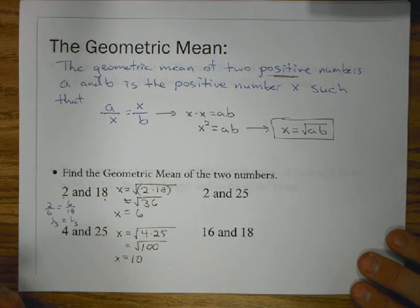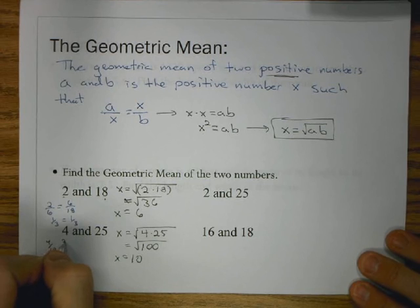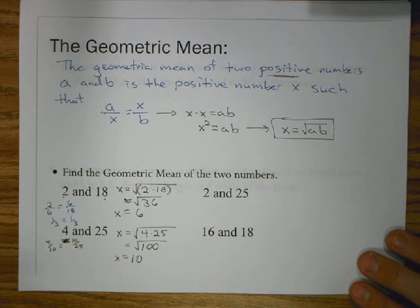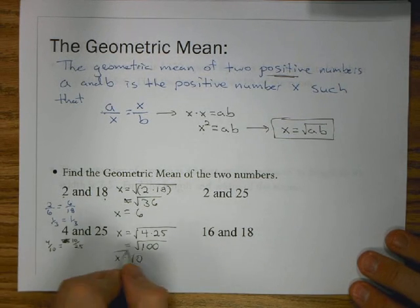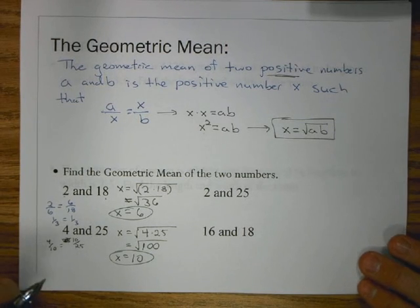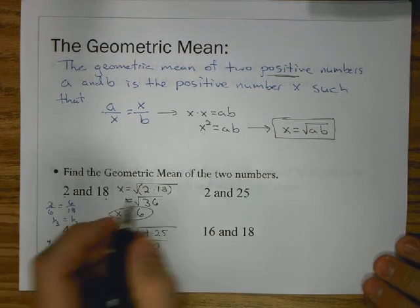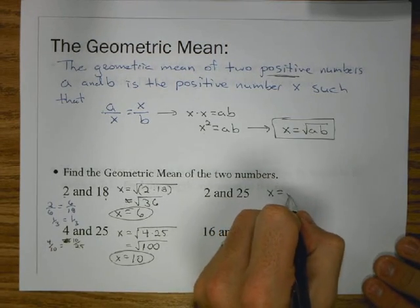So, my geometric mean is the square root of 2 times 18. If we do that, we get the square root of 36, which is just 6. So, geometric mean of 2 and 18 is 6. Next, I have 4 and 25. So, the square root of 4 times 25. This one I can multiply and see it's 100. The square root of 100 is 10. So, my geometric mean of 4 and 25 is 10.